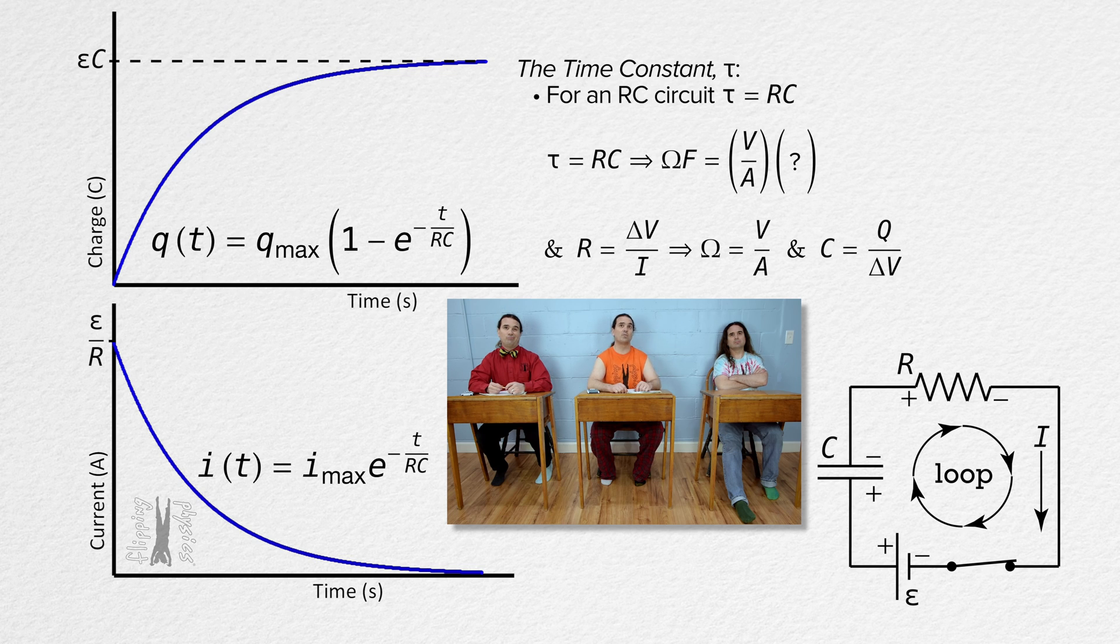And capacitance equals charge over electric potential difference. So farads are coulombs over volts. Volts cancels out and we are left with coulombs over amps.